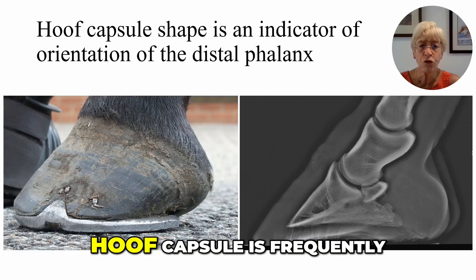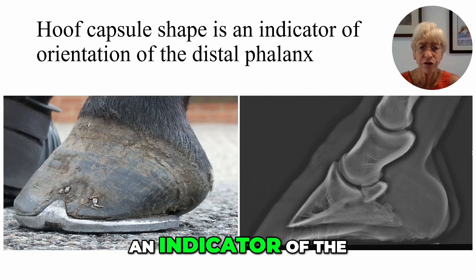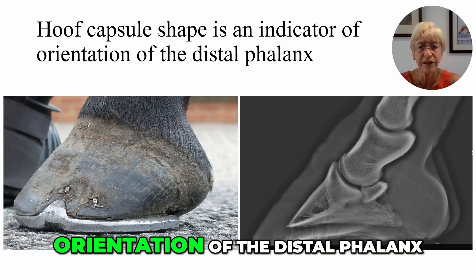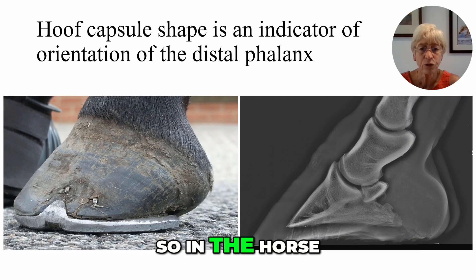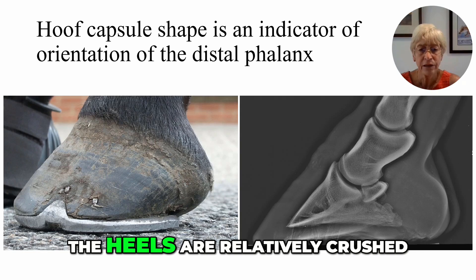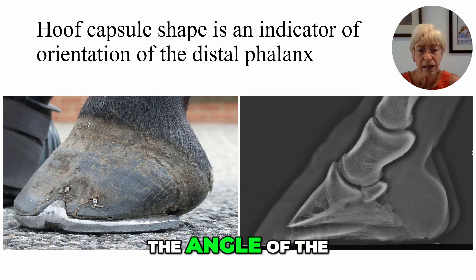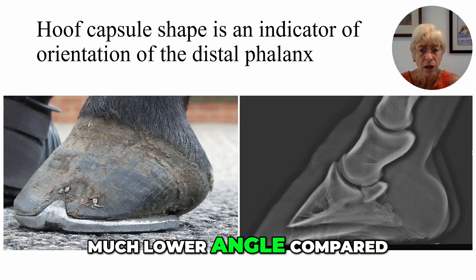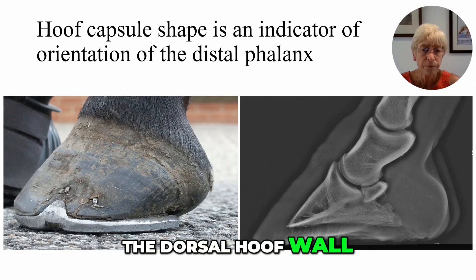The shape of the hoof capsule is frequently an indicator of the orientation of the distal phalanx. In the horse on the left, we can see that the heels are relatively crushed.